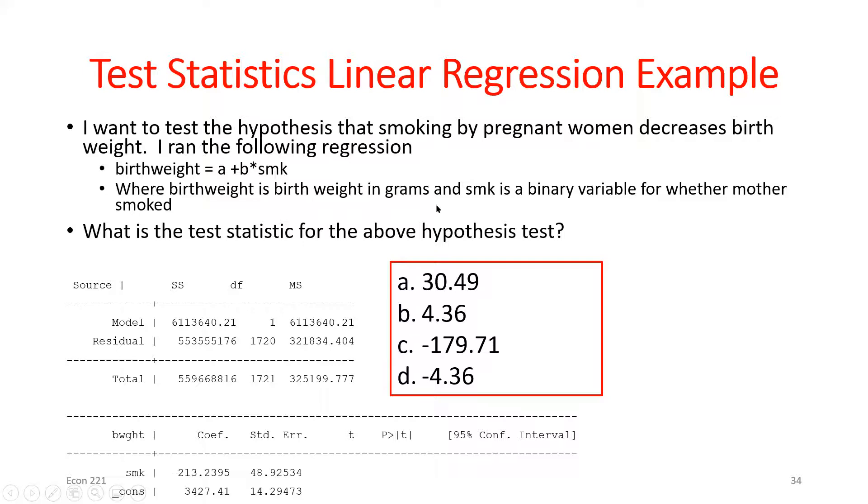The group that was zero was mothers who didn't smoke while pregnant; the group that was one was those who did. The effect of smoking while pregnant is it decreases predicted birth weights by 213 grams. For the intercept: if X equals zero — meaning someone doesn't smoke while pregnant — the predicted birth weight for that individual would be 3,427 grams.